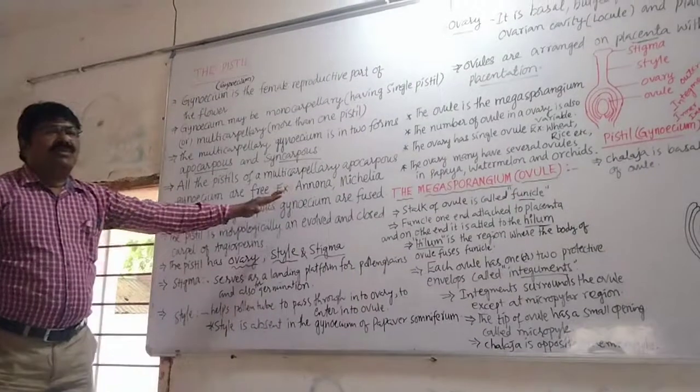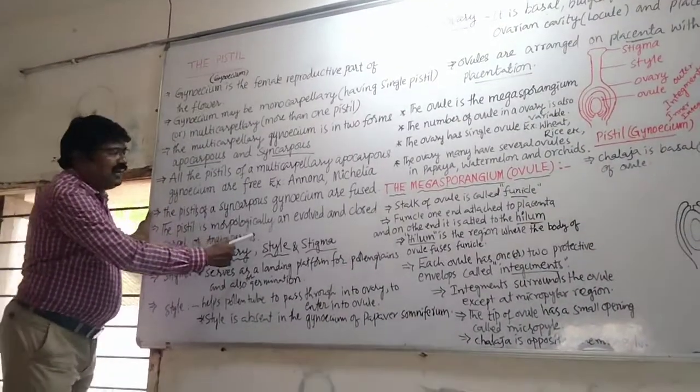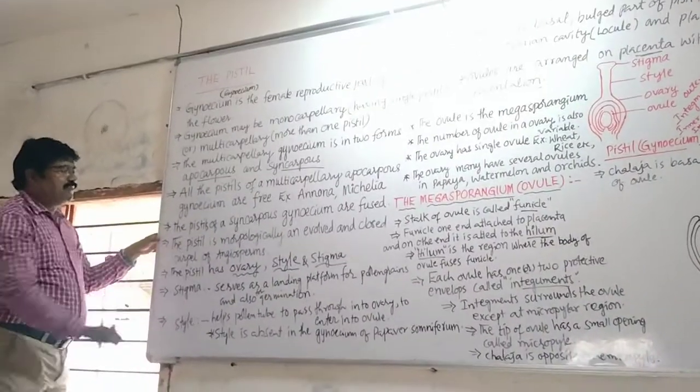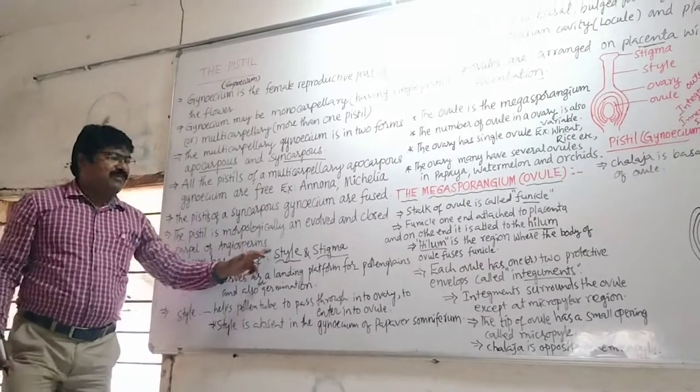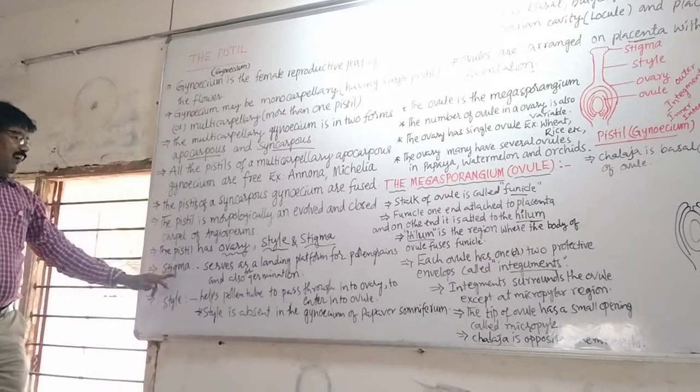So many best examples are there. And also when the pistil is monocarpillary, the pistil has three parts: ovary, style, and stigma.